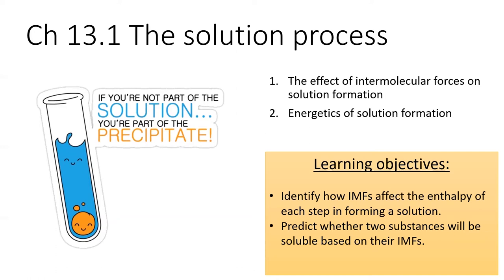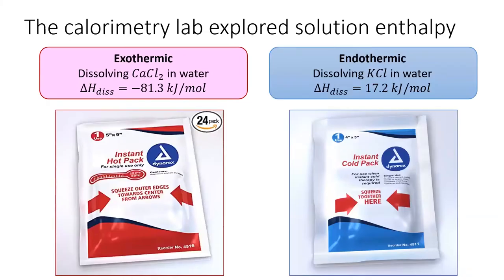Back in week five we explored the enthalpy of dissolution. In the first kitchen chemistry lab we had two salts that were both readily soluble in water, but calcium chloride caused an increase in temperature while potassium chloride caused a decrease in temperature. How can we explain their difference in behavior? The answer is to divide the process of solution formation into three steps — two are endothermic and one is exothermic.